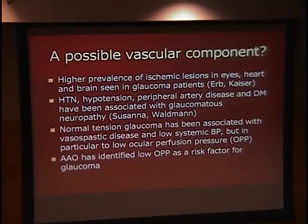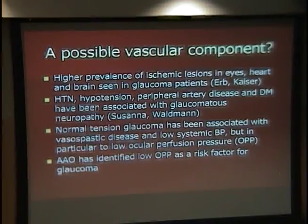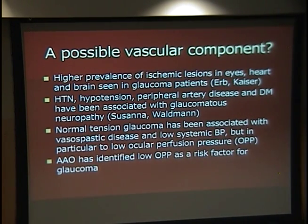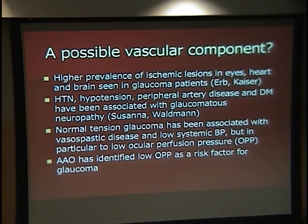I'd like to talk about possible vascular components. Studies have found a higher prevalence of ischemic lesions in the heart, eyes, and brain in glaucoma patients. Additionally, diseases of the blood vessels and blood pressure — both hypertension and hypotension — have been associated with glaucoma, along with diabetes and peripheral artery disease. Normal tension glaucoma has been associated with vasospastic disease such as Raynaud's, low systemic blood pressure, and particularly something called ocular perfusion pressure. In the last few years, the American Academy of Ophthalmology has identified ocular perfusion pressure as a risk factor for glaucoma.